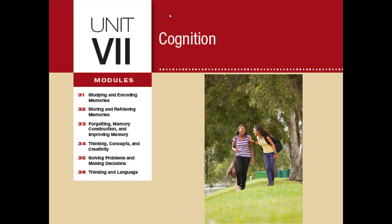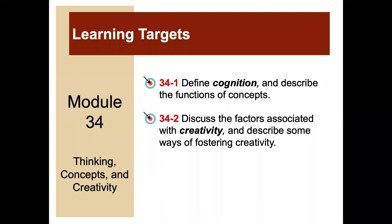Welcome to Unit 7 Cognition. We have a very short module today — Module 34 — on Thinking, Concepts, and Creativity. It's actually one of my favorites. There are only two learning targets: define cognition and describe the functions of concepts, and discuss the factors associated with creativity and describe some ways of fostering creativity.